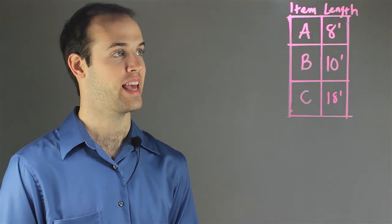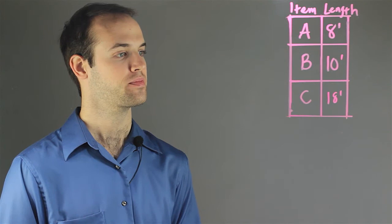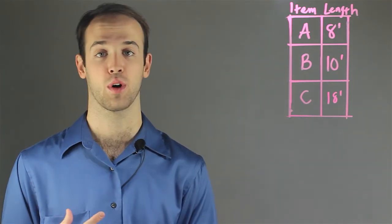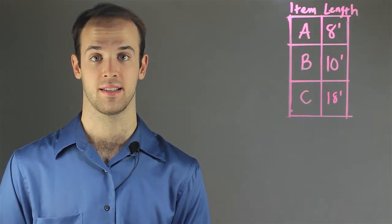We know that item A is 8 feet long, item B is 10 feet long, and item C is 18 feet long. And we're told that we want to know the ratio between the lengths of the objects.